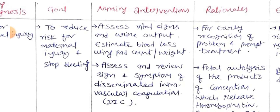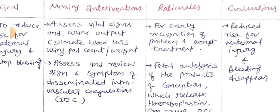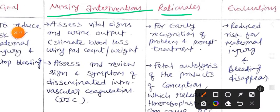The goal is to reduce the risk for maternal injury and stop bleeding. The first nursing intervention is to assess vital signs, urine output, and estimate blood loss using pad count and weight monitoring. The rationale is for early recognition of the problem and prompt treatment.